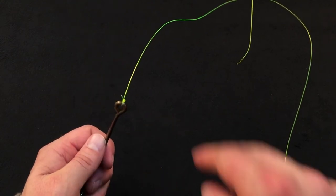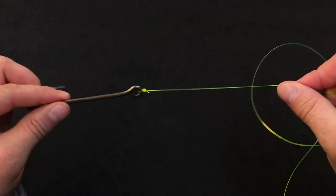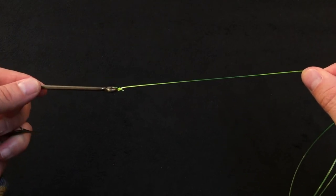You can trim your tag relatively close, and that's your Pitsun knot.